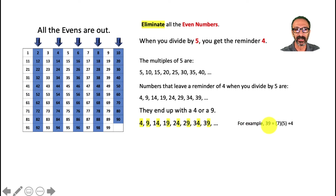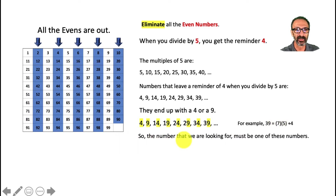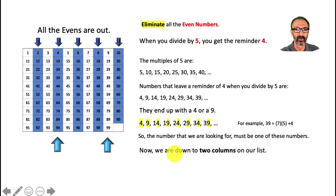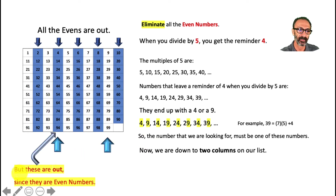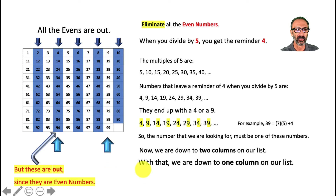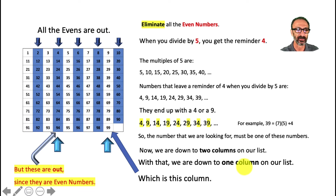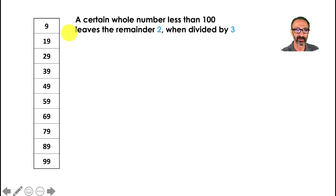To confirm: 39 = 5 × 7 + 4, so the number we're looking for must end in a 4 or a 9. That leaves two columns. But wait — the numbers ending in 4 are even, and those were already eliminated by the first condition. So that entire column is out, and we're down to just one column: numbers ending in 9. We've gone from 99 numbers down to a single column.